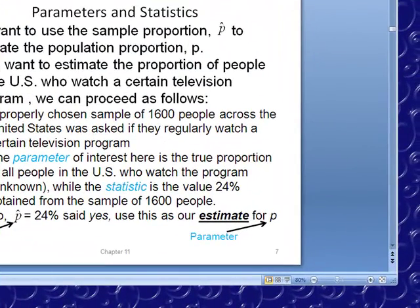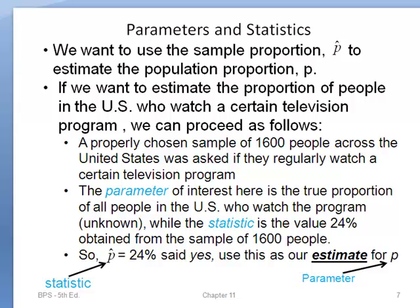We want to use the sample proportion — p-hat — to estimate the population proportion. For example, if we want to estimate the proportion of people in the United States who watch a certain television program, we choose a sample. In our example, we chose 1,600 people across the United States and asked them if they regularly watched a certain television program. The parameter of interest is the true proportion of people who watch the program in the US — that's unknown. We can find the percentage from our sample: let's say 24% watched this program. So p-hat equals 24%, and we use it to estimate p, our parameter.